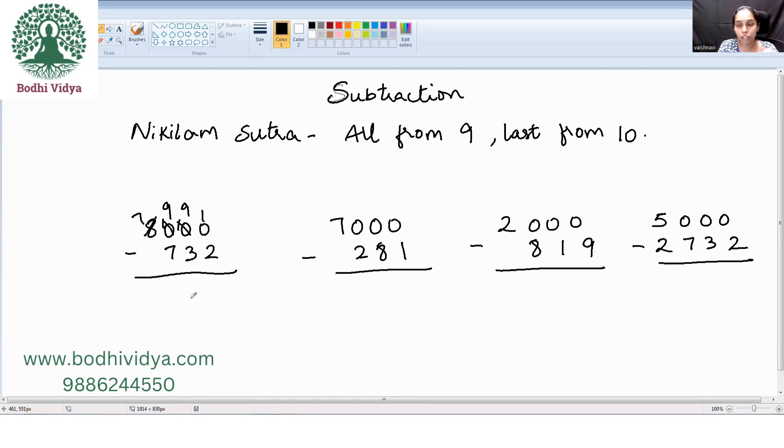We are trying to bypass this process. So for this, we are using a method from Vedic Maths that is called Nikhilam Sutra, which states all from 9 and last from 10.